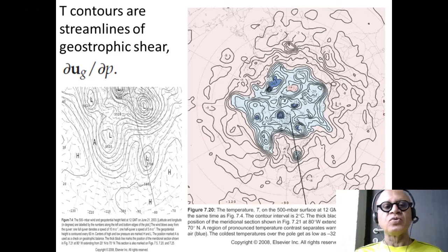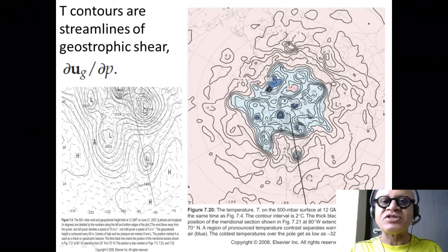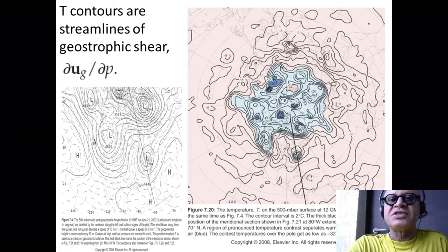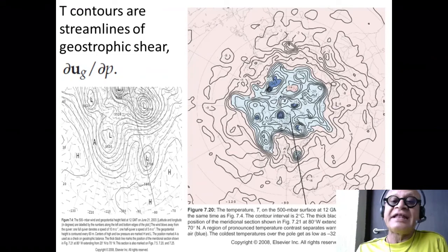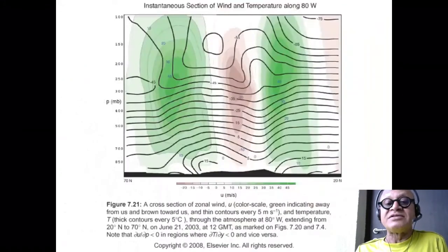So, why? Because Rossby number is not small here anymore. We have dropped the Rossby number mentioned for a while, but it hasn't gone away. We still have to have low Rossby numbers to have all these balances. Geostrophic balance and thermal wind balance.